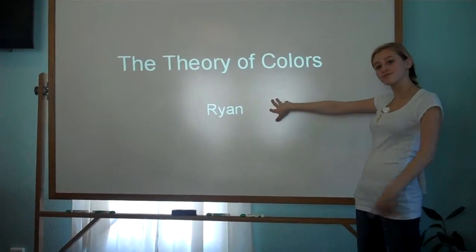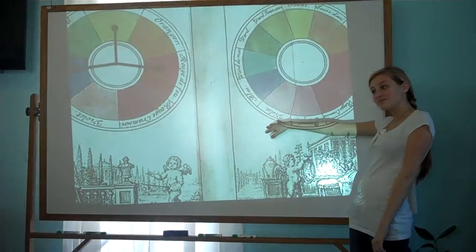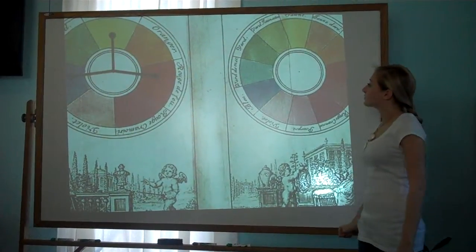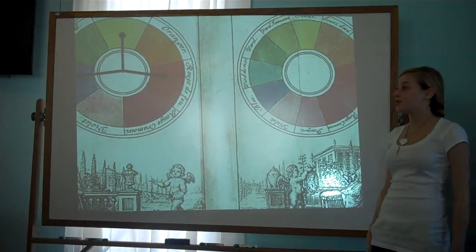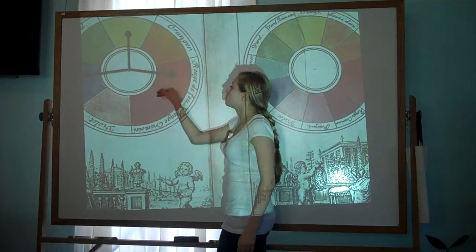I'm Ryan, and this is the theory of colors. The color wheel starts out with primary colors. The primary colors are yellow, red, and blue.